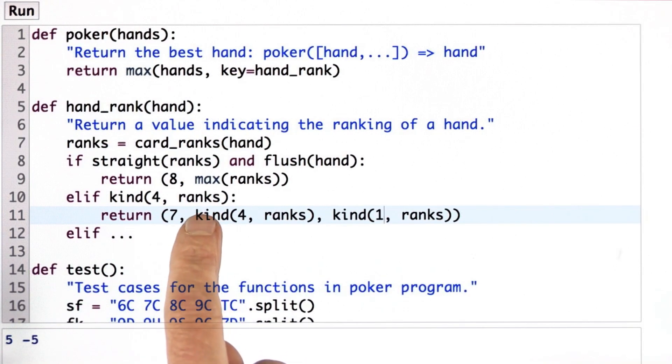Now, there's something a little bit tricky here that I want to go over and make sure we get right. So here I'm kind of overloading the idea of the function kind. I'm using it to return a value, returns 9 when you have 4 9s, but I'm also using it as a Boolean test, saying if you have 4 of a kind at all,